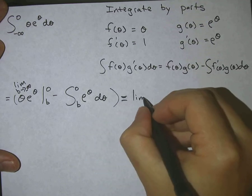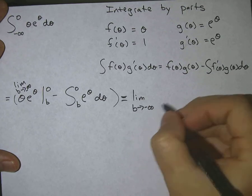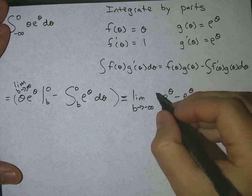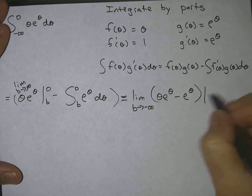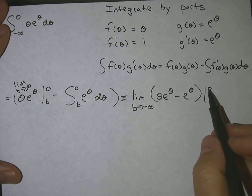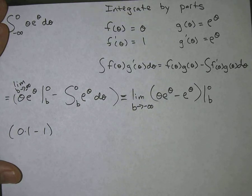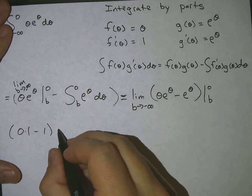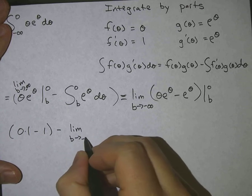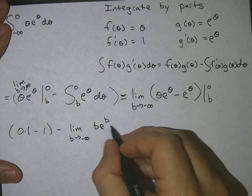That becomes the limit as b approaches negative infinity of theta e to the theta minus e to the theta. The top part is just zero times one minus one when you plug in zero. For the bottom part, plugging in b gives minus the limit as b approaches negative infinity of b e to the b minus e to the b.